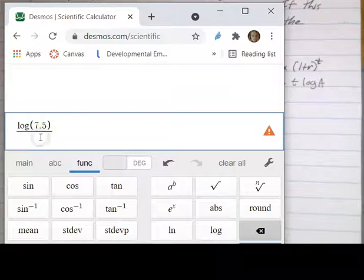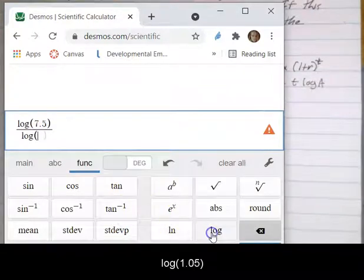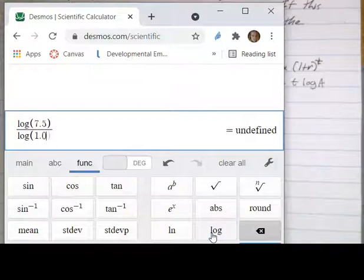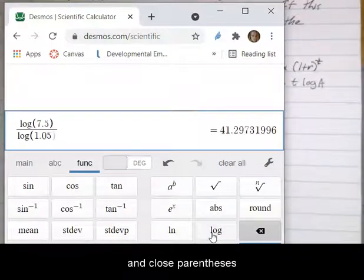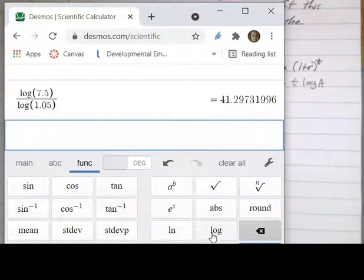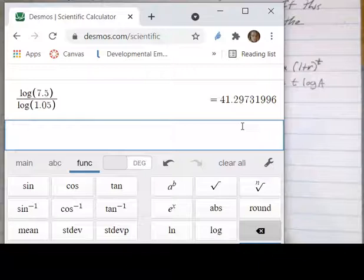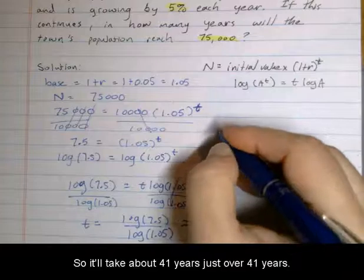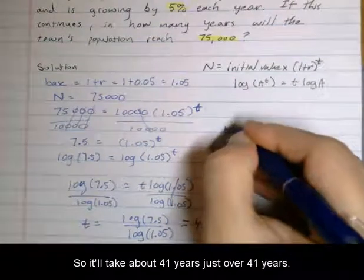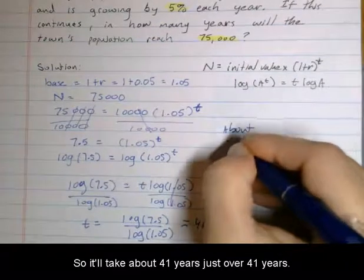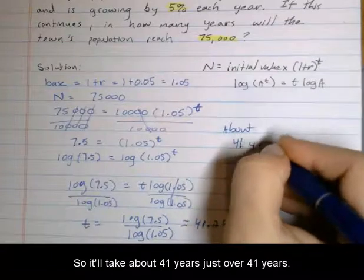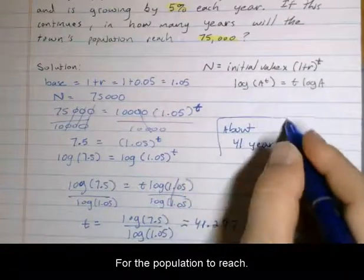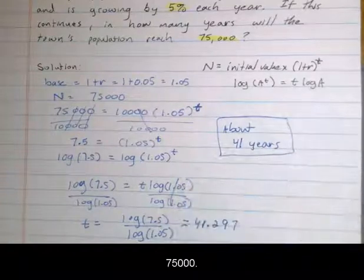Approximately 41.297, so it'll take about 41 years, just over 41 years for the population to reach 75,000.